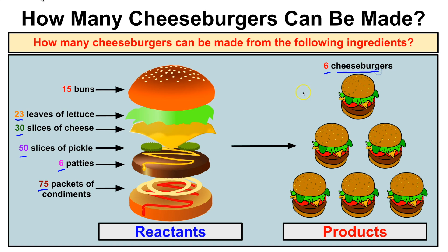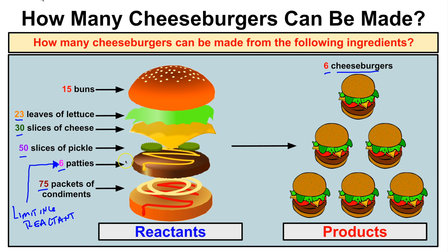To answer that question, we look at our ingredients and notice that the maximum number of cheeseburgers we can make is six. Why? Because we only have six patties, and once we run out of hamburger patties we can no longer make any more cheeseburgers. So the maximum number of cheeseburgers is six, and the six patties would be our limiting reactant.